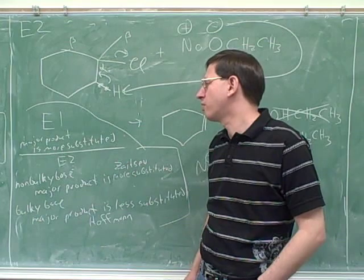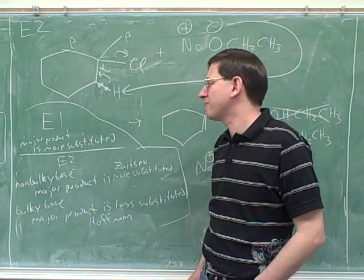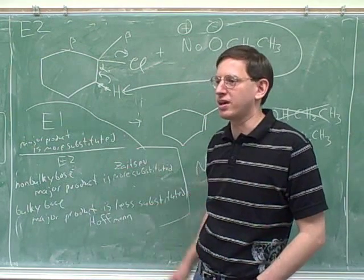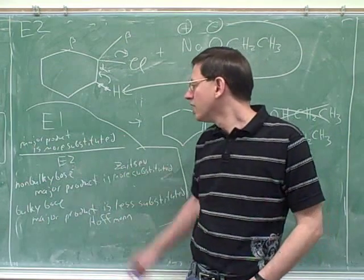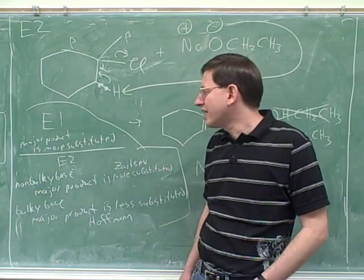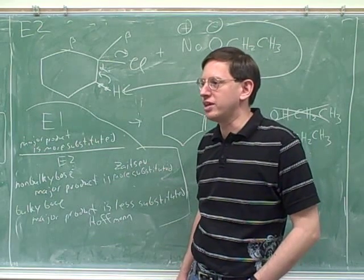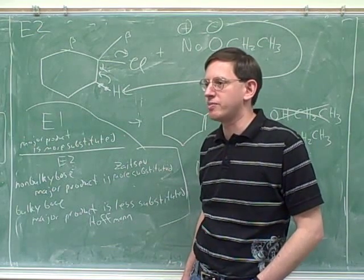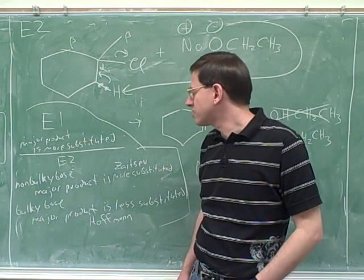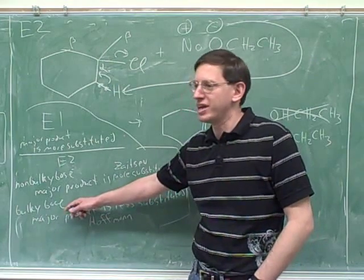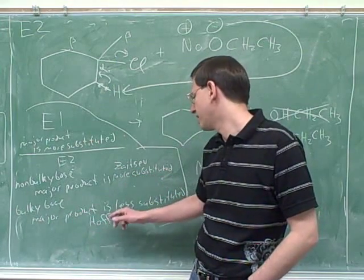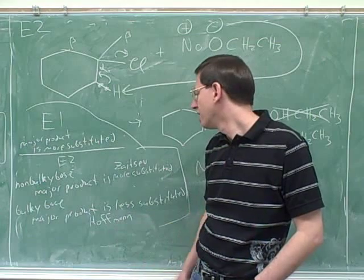Once the carbocation is formed, it's going to be so happy to be attacked by anybody and stop being a carbocation that steric hindrance is not a big issue. But for E2, we saw before that steric hindrance is not a big obstacle to E2. That's why E2 could still work even with a tertiary substrate. But you could still have too much steric hindrance if you have a very substituted beta carbon and a very substituted base.